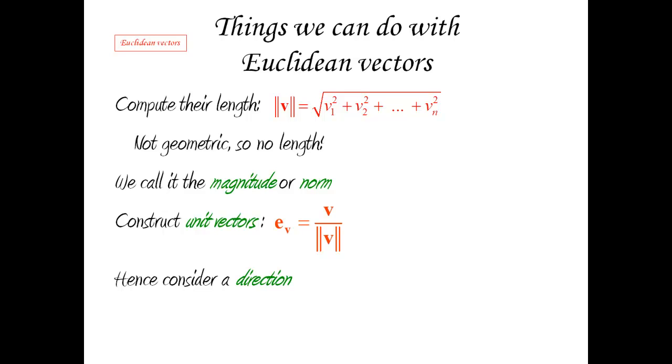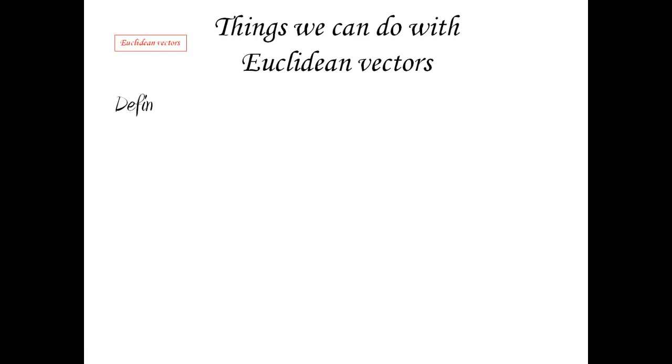But we can do even more, which is very similar to what we've done with geometric vectors. We can define the angle between two vectors. Remember, how did we define the angle between two geometric vectors? We defined it geometrically, but then we found out that we could compute that angle by using only dot products and lengths. In fact, the formula was that cosine theta equals v dot w divided by the length of v times the length of w.